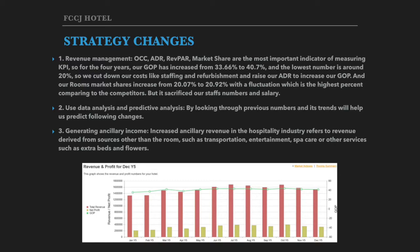First of all, for revenue management, although our GOP has increased from 33.66% to 40.7% and our rooms market shares are the highest compared to competitors, we sacrificed our staff's numbers and salary. So we should adjust other costs instead of cutting employee costs. Second, we should use data analysis and predictive analysis by looking at previous numbers, which will help us predict following changes. The third one is to generate ancillary income. For example, we can provide customers with extra services like transportation and entertainment to increase our revenue.